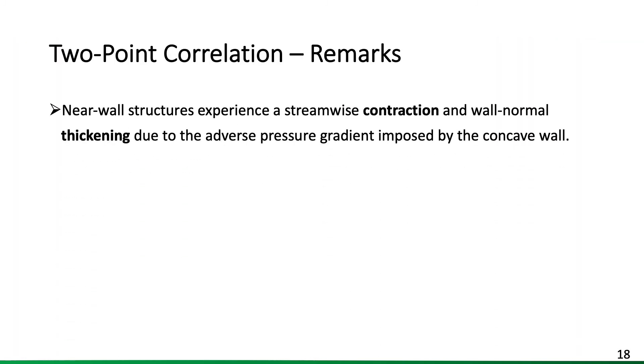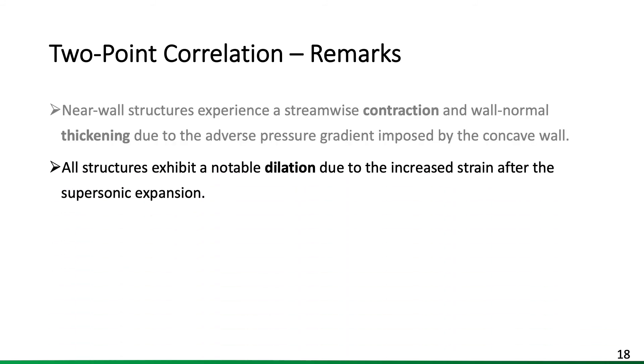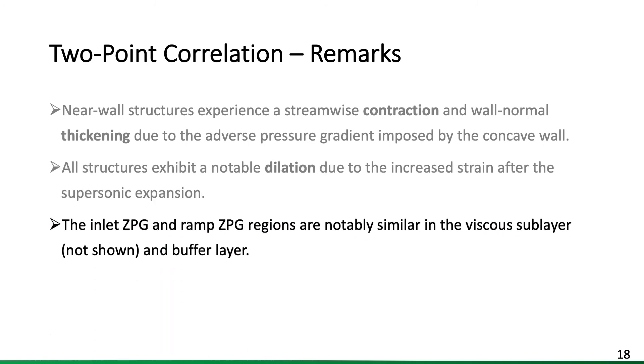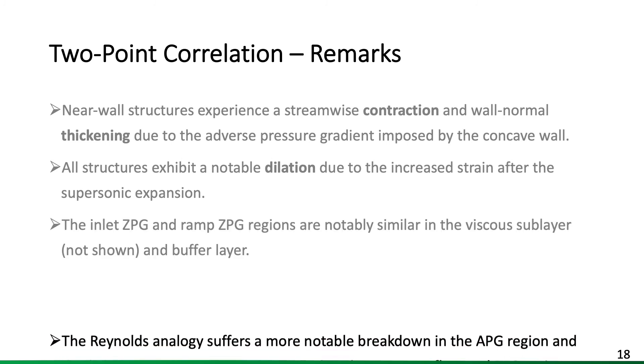Now on to some high-level remarks regarding the two-point correlation. Nearly all the near wall structures experience a streamwise contraction and wall normal thickening due to the adverse pressure gradient imposed by the concave wall. All structures exhibit a very notable dilation due to increased strain rates after the supersonic expansion. Both the inlet and ramp CPG regions are notably similar in the viscous sublayer, be it not shown, and the buffer layer, which was shown.